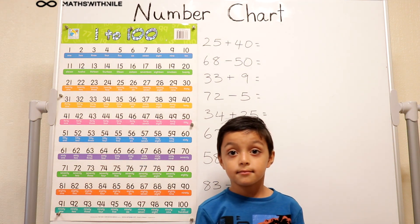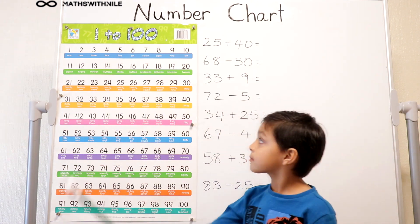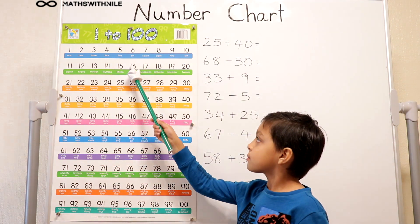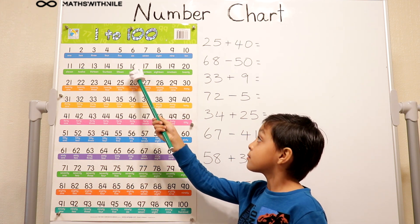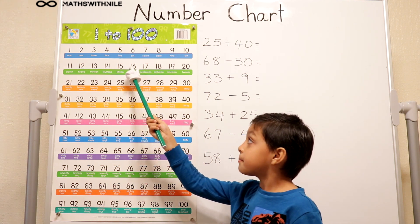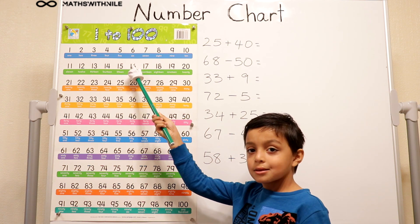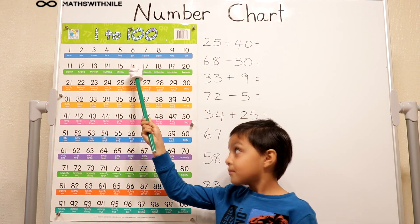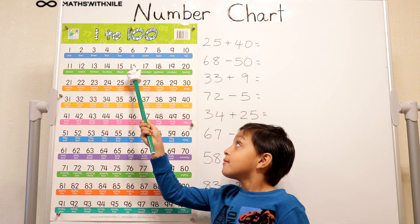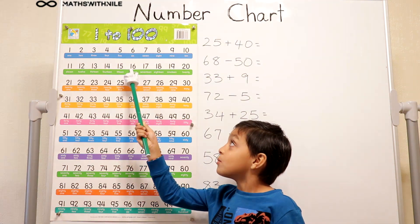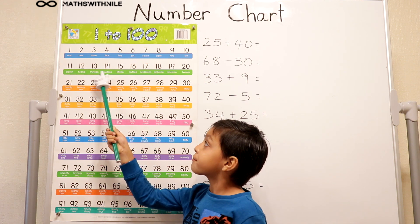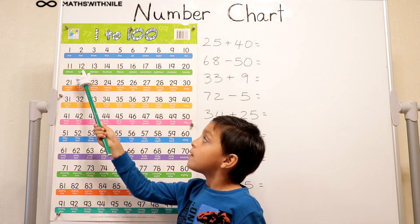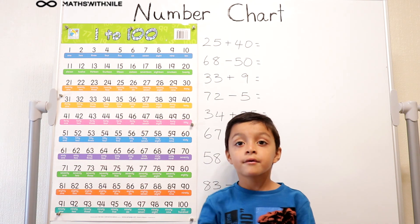Let's do, can we point at 16? And what would we do if we were taking away? Which way would we go? Backwards. Backwards. So why don't you do 16 take away 4? 16 take away 1, 2, 3, 4. And it equals 12. Good.